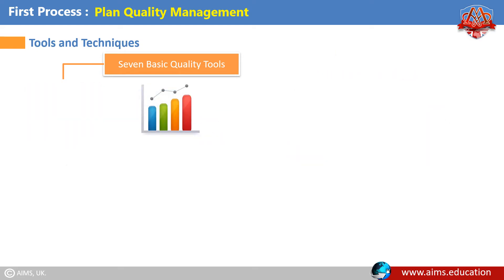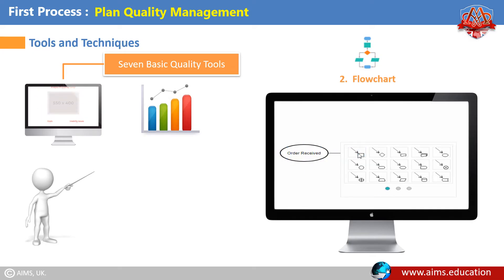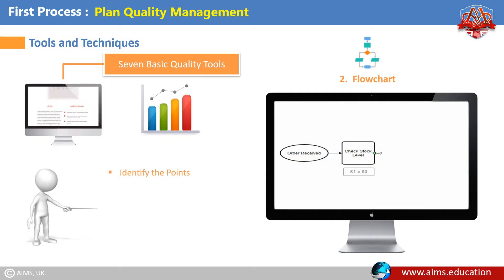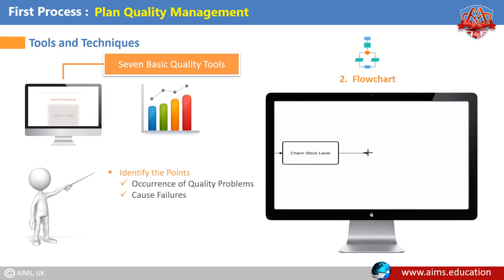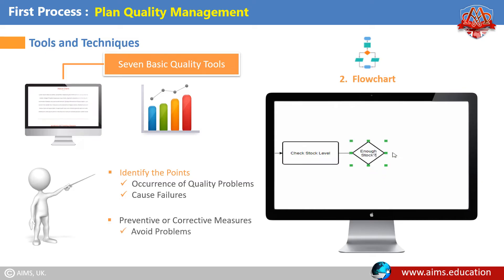Second basic quality tool — Flowchart: It is a graphical representation of a process that shows the relationships among process steps. It can help a project identify the points where quality problems might occur and may cause failures. Preventive or corrective measures can be taken to avoid problems.